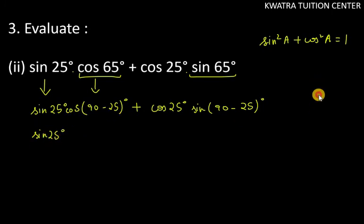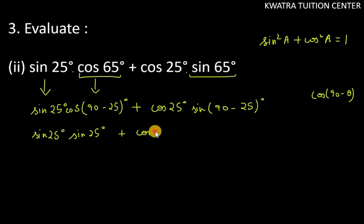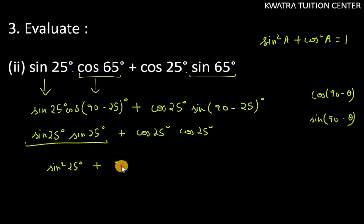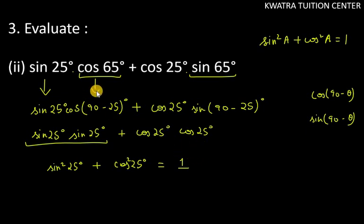Cos(90 minus theta) is sin theta, so cos(90 minus 25) becomes sin 25 degree. Sin(90 minus theta) is cos theta, so sin(90 minus 25) becomes cos 25 degree. So the expression becomes sin 25 times sin 25 plus cos 25 times cos 25, which is sin square 25 degree plus cos square 25 degree. So the final answer is 1.